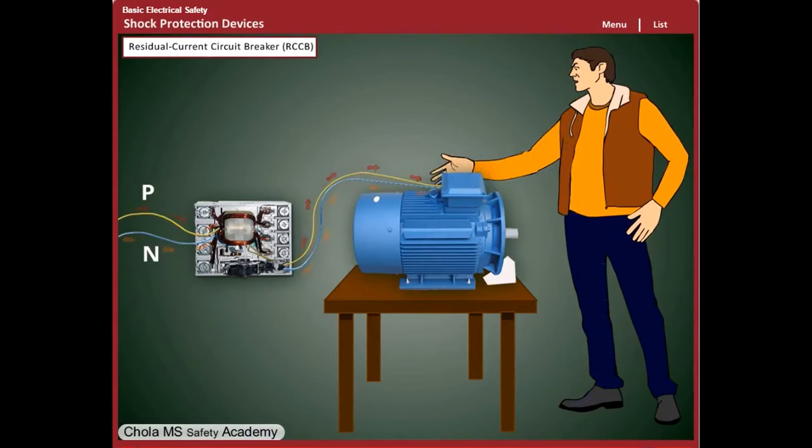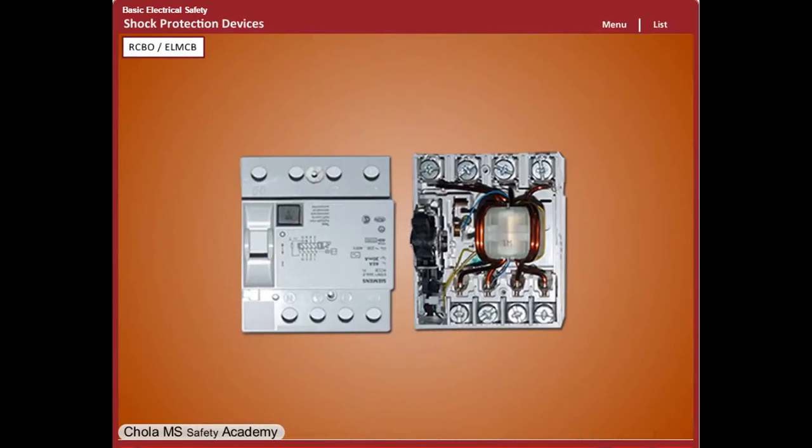Residual Current Circuit Breaker with Overcurrent Protection (RCBO): If you desire to protect an individual circuit, an RCBO can be used. This incorporates a residual current device and a miniature circuit breaker in one device.